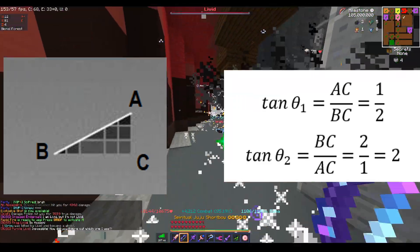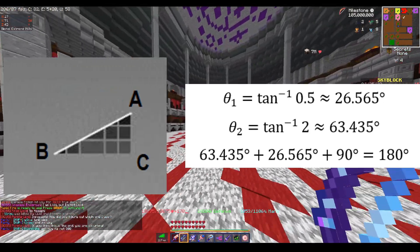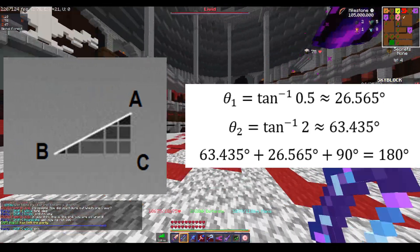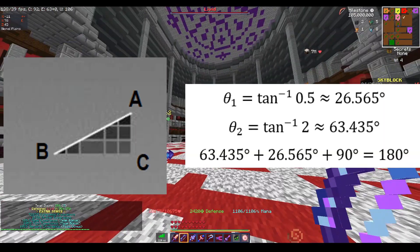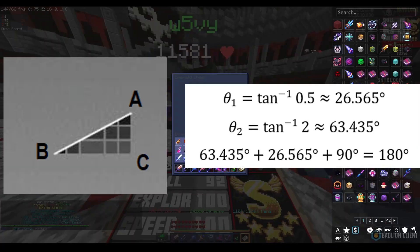After we have our two trigonometric equations, we move the tangent to the other side and it becomes inverse. We then see that theta sub 1 is equal to approximately 26.565 degrees and theta sub 2 is approximately 63.435 degrees.